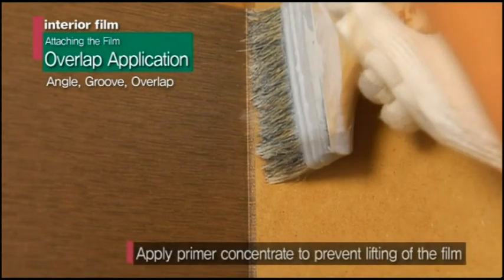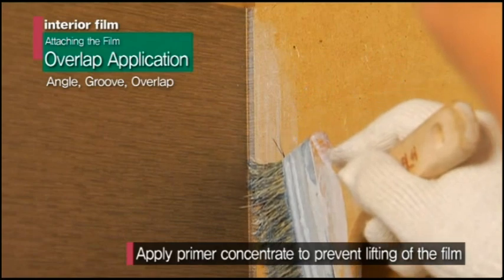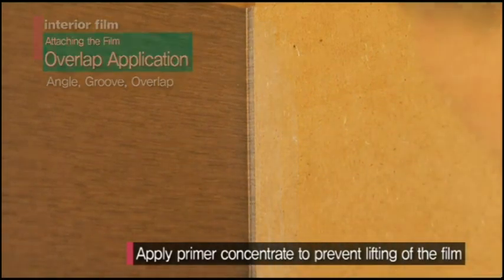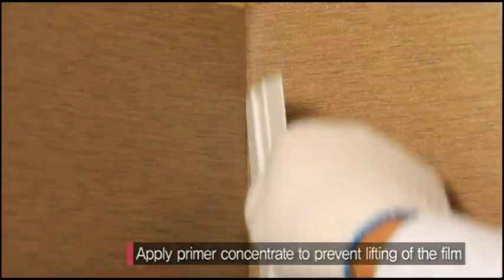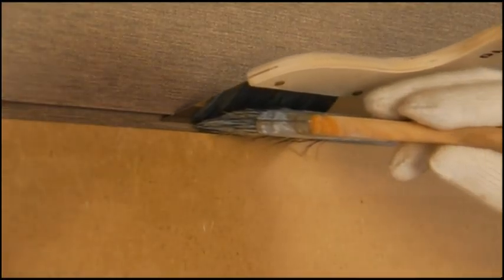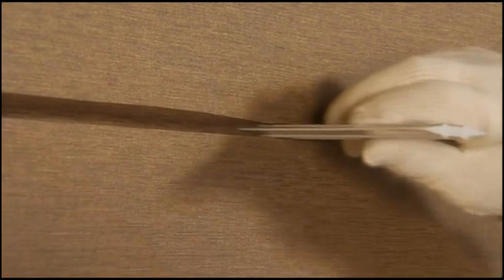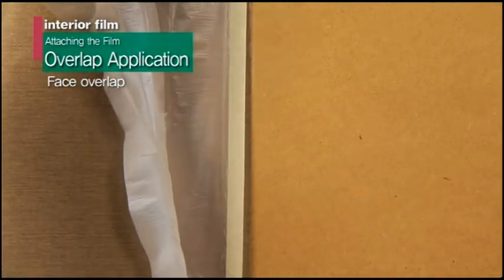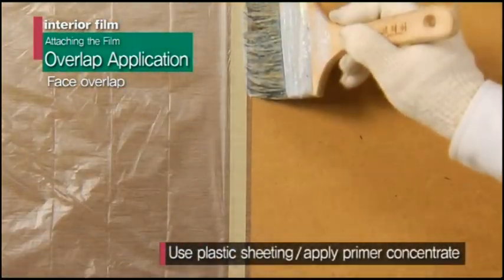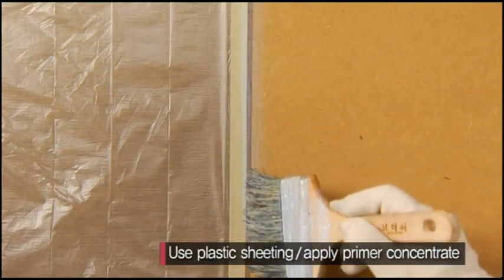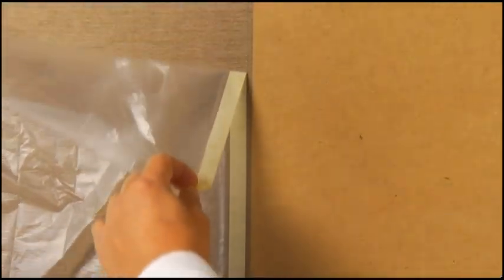If there are overlapping areas of film on the angles or grooves, you must apply primer to prevent lifting of the film. In the case of overlapping surfaces, use plastic sheets to apply primer and wait for it to dry completely before attaching the film.